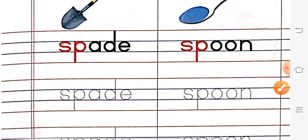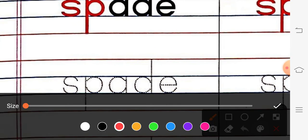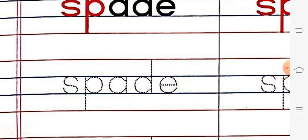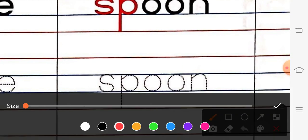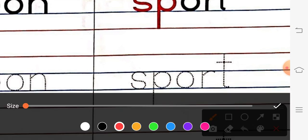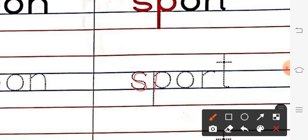What did we learn? Spade. S, P, A, D, E. Spade. Then, comes your Spoon. That is S, P, O, O, N. Spoon. And then comes Sport. S, P, O, R, T. Sport.